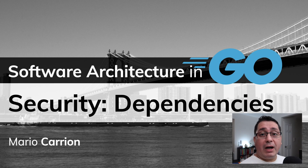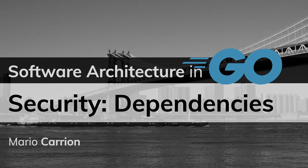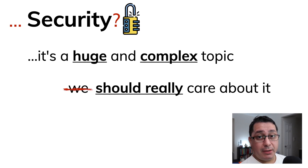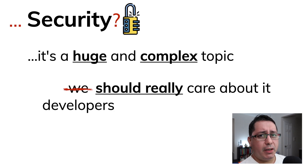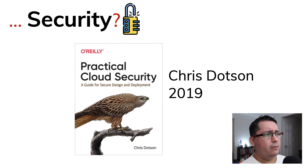Hello, my name is Mario, welcome to another software architecture in Go video. In today's episode I'm going to be discussing security, specifically when dealing with dependencies. Security is a huge and complex topic — I'm stating the obvious — and we as developers should really care about it. There is a nice book called Practical Cloud Security, released in 2019 and written by Chris Dodson, feel free to check it out.